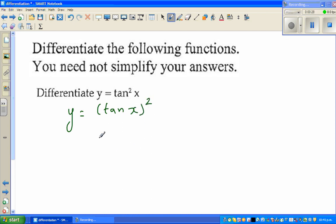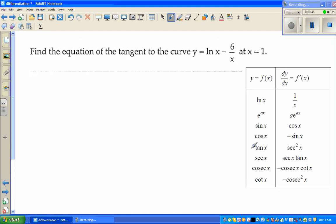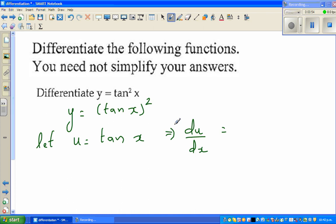This can be written as y equals tan x the whole squared. I'm going to let u as tan x, which implies if you differentiate with respect to x, du by dx. Now what is the differentiation of tan x? From the formula sheet, differentiation of tan x is sec squared x. So du by dx is sec squared x.